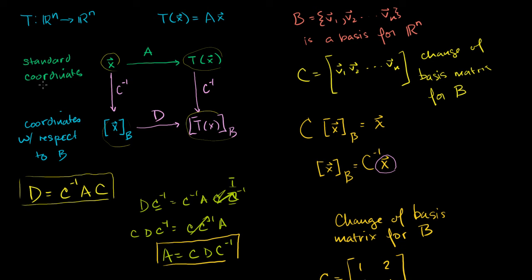We've seen that we can apply linear transformations in different coordinate systems. The transformations we've been performing before have all been with respect to the standard basis. In standard coordinates, if you have some vector x in your domain and you apply some transformation, then if A is the transformation matrix with respect to the standard basis, you multiply x by A and you get the transformation of x.